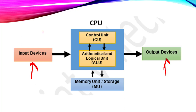Our computer works on the IPO cycle. In the IPO cycle, first we have to give some inputs, then the CPU will process the inputs and then it will generate the output, which will be given to the output devices. Now inside this CPU we have two functional units termed as CU and ALU. In this video we have to discuss about the CU and ALU in detail. When the CU and ALU work on the data and calculate the result, that result is sometimes stored in the computer's storage using the memory unit.